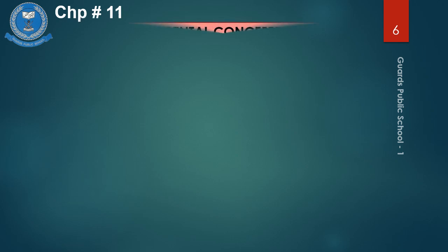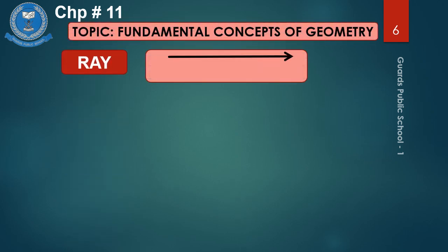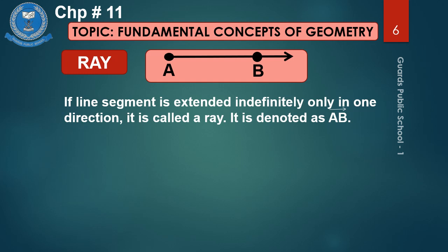Number 3 is ray. You can see the diagram — point A and point B. If a line segment is extended indefinitely only in one direction, it is called a ray. It is denoted by AB with a small arrow over it. A ray has only one end point, which is A. Point B is not an end point because the arrow shows it extends indefinitely in one direction.